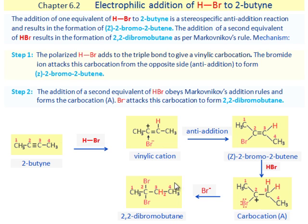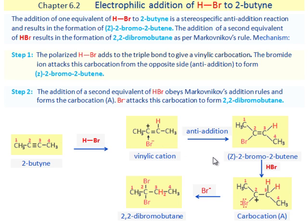Reaction Mechanism, Step 1. The polarized HBr adds to the triple bond to give a vinylic carbocation. The bromide ion attacks this carbocation from the opposite side to form Z-2-bromobutene.